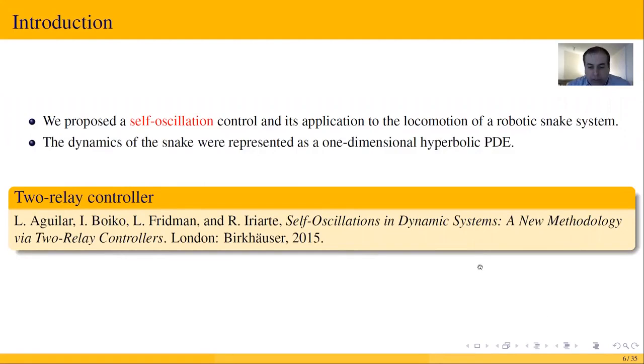We modeled the snake robot as a hyperbolic partial differential equation derived from the standard Hamilton principle. A boundary two-relay controller was used to induce self-oscillation in a snake-like robot, or what we know as undulations.